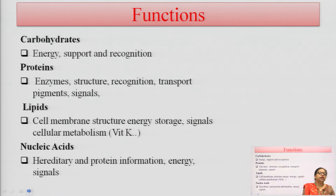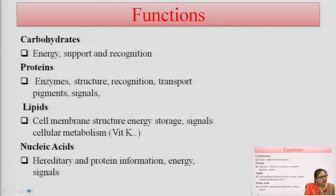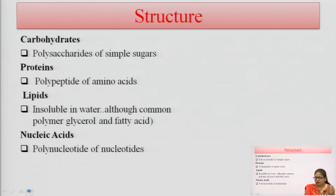The next is nucleic acid. Nucleic acids are hereditary material having DNA and RNA in their structure. Hereditary and protein information occurs with these nucleic acids; they also give energy to the body and are helpful for producing signals so that our body is properly functioning.